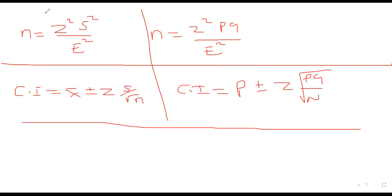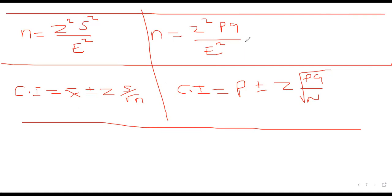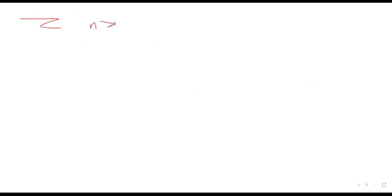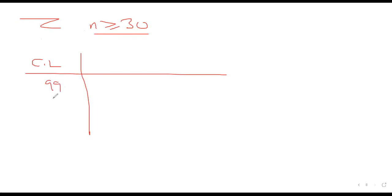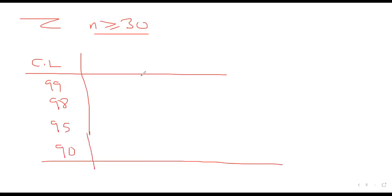These formulas will be provided, but you should know them. The Z-value in these formulas comes from the confidence level. Confidence levels given are 99%, 98%, 95%, and 90%. The difference between 100% and those levels is the significance level — so 1%, 2%, 5%, and 10% respectively. The significance level and confidence level must add up to 1.